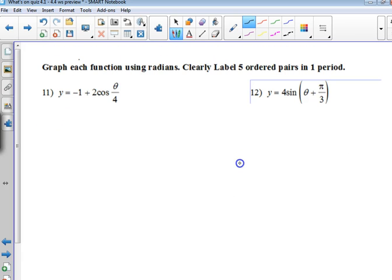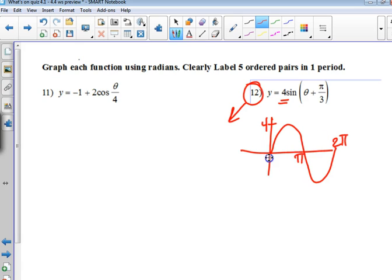That brings us to 11. The ordered pairs for 11 are written at the bottom of the worksheet. Phase shift students struggle with. I would suggest you just drew the sine graph with an amplitude of 4. Where would it normally finish? 2 pi, pi, pi over 2, 3 pi over 2.